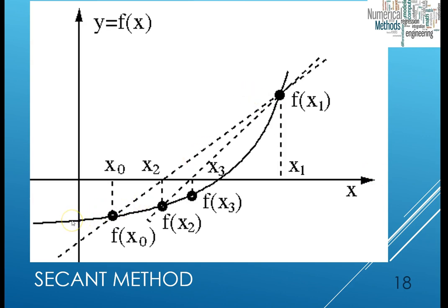For example, you're given a certain function and asked to solve for the root of a non-linear function. The root is this point here. How does the secant method work? First, you assume two points — x sub zero and x sub one. When you project those two points on the curve, x sub zero gives you f(x0) and x sub one gives you f(x1). You then connect those two points on the graph with a secant line, and that secant line crosses the x-axis at a point.